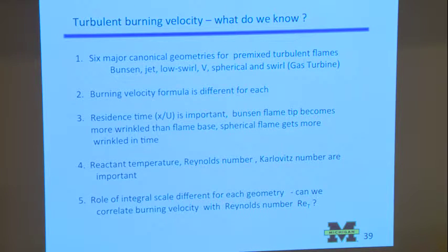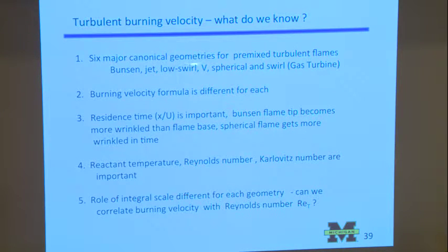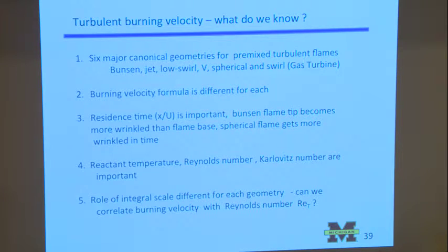This data was only for a Bunsen flame, and a problem with turbulent combustion is you need to define six major canonical geometries and see if they all agree — and they generally don't. If you have premixed turbulent flames of six different types, you won't get the same formulas and graphs. They'll have the same general trends but slightly different parameters. The formula is different for each geometry.